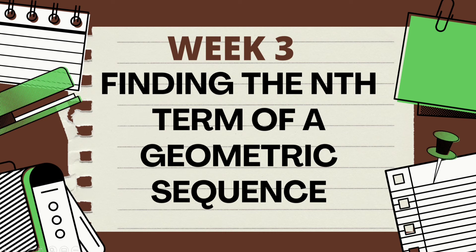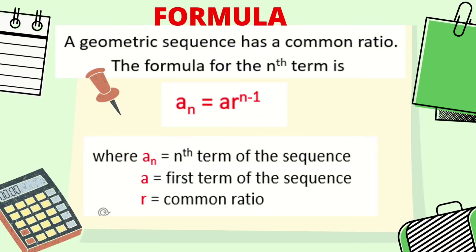Next is finding the nth term of a geometric sequence. The formula is: a sub n is equal to a sub 1 times r raised to n minus 1, where a sub n is the nth term of the sequence, a sub 1 is the first term of the sequence, and r is the common ratio.